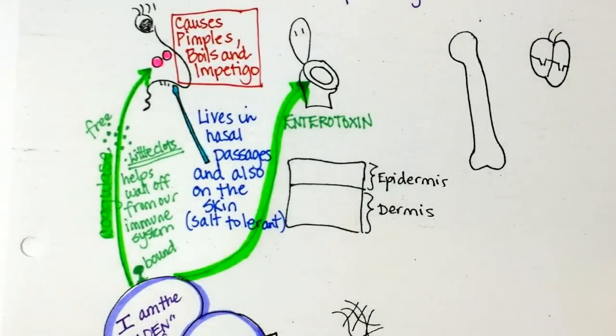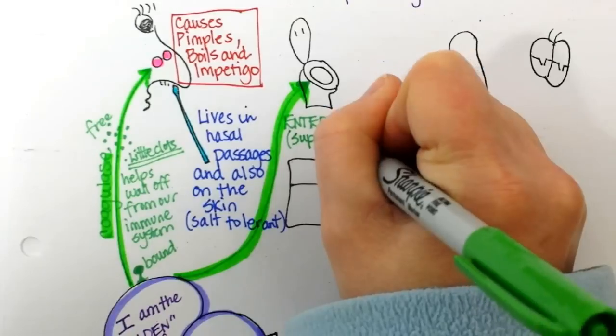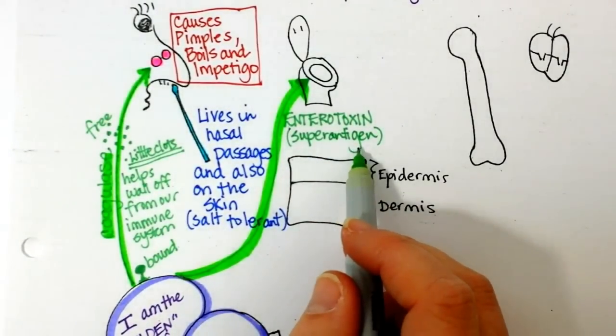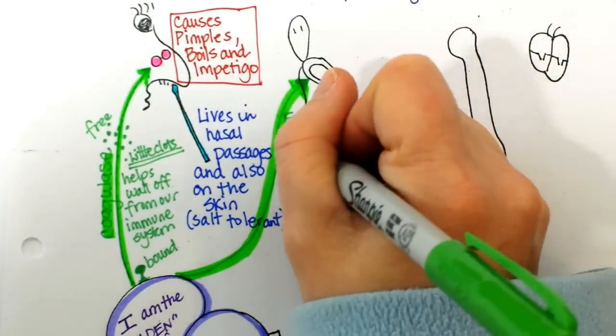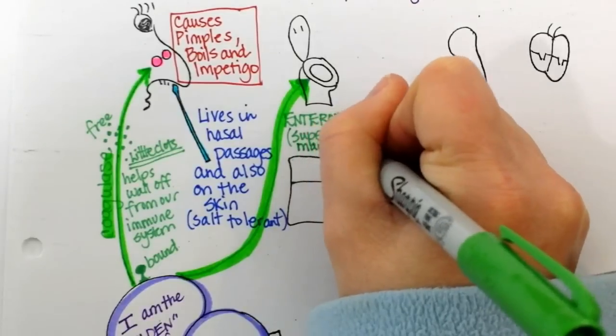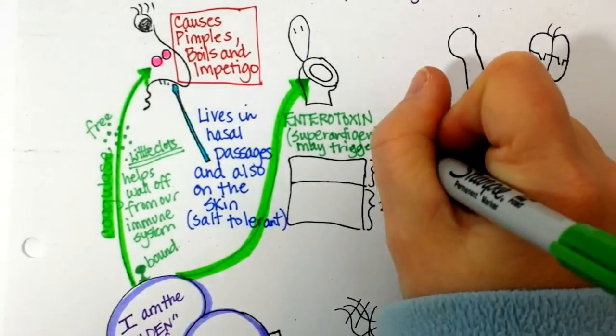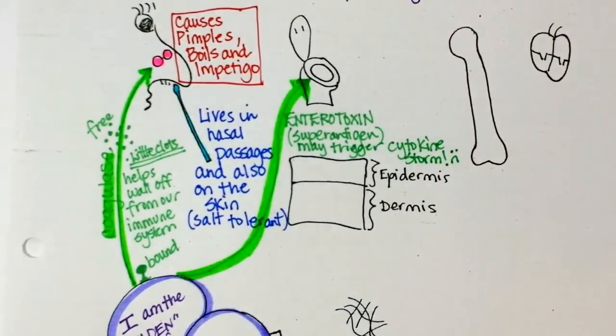So if a food handler has maybe Staph aureus in their nose. Maybe they rub their nose. They get some of this toxin onto their hands. And then it can end up on your food. And unfortunately this is known also as a super antigen. You may remember hearing about super antigens in class. And what super antigens are able to do is start a cytokine storm. So if this gets in the bloodstream. Let's say it damages the intestinal walls badly enough. That the toxin is able to get into the bloodstream. It could trigger a cytokine storm. And that could lead to septic shock. Because a cytokine storm can lead to massive inflammation.